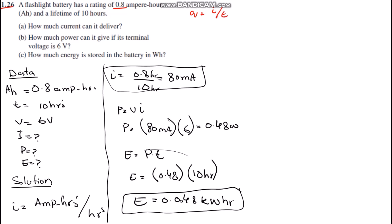The lifetime of the battery is 10 hours, and the question is demanding: how much current can it deliver? How much power can it give if the terminal voltage is 6 volts? And how much energy is stored in the battery in watt-hours?